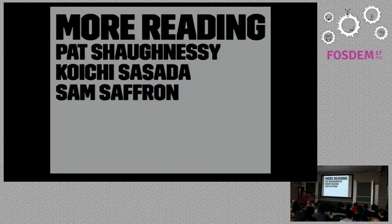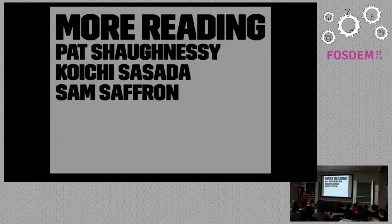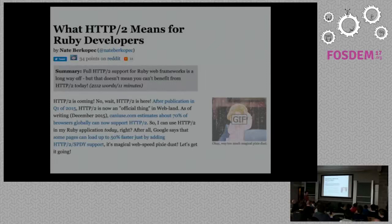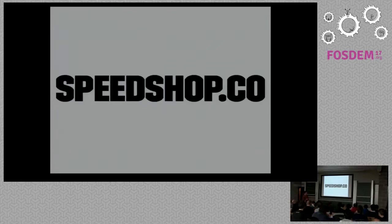For more reading, I suggest three authors. Pat Shaughnessy wrote a great book called Ruby Under the Microscope — the starting point if you want to learn more about how Ruby works internally. Koichi has written things online in English about how Ruby garbage collection works, and Sam Saffron of Discourse has as well. If this was interesting to you, I have a course called The Complete Guide to Rails Performance — screencasts and a long book about optimizing Rails applications — all at realspeed.com. My blog is at speedshop.co.